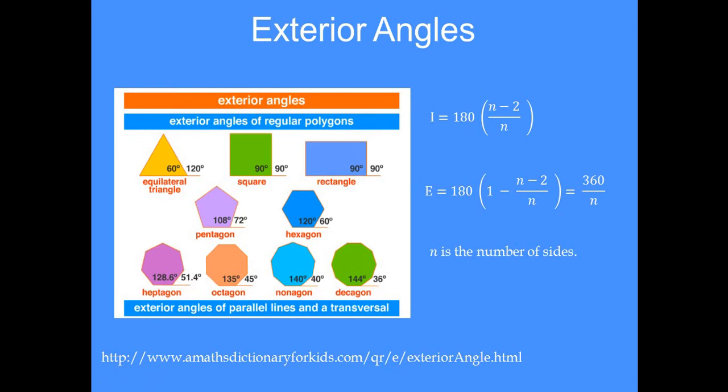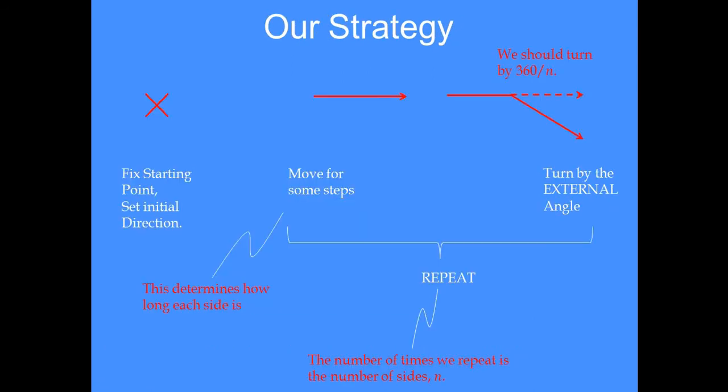The strategy we are going to follow is that we will fix the starting point just like we did for the square. We will fix the starting point, we will set the initial direction and then we will make the sprite move for some number of steps and thereafter we will make it turn by the external angle.